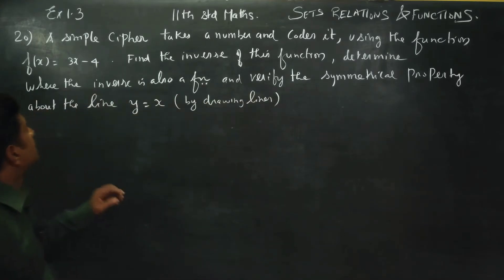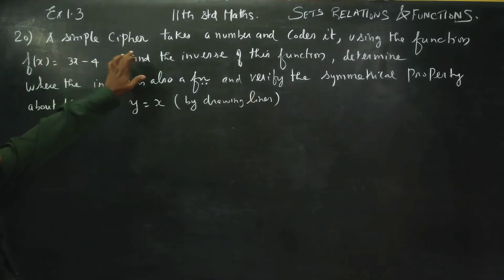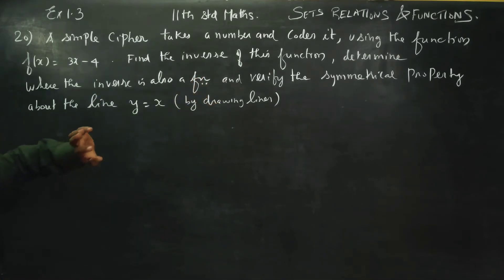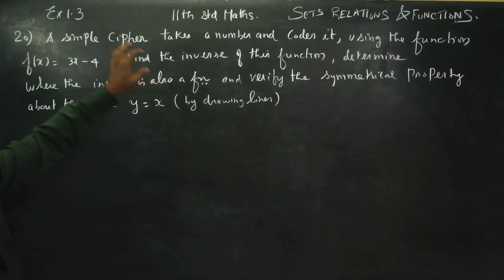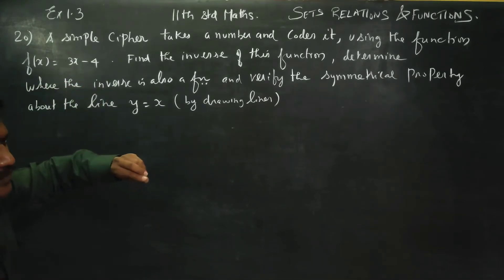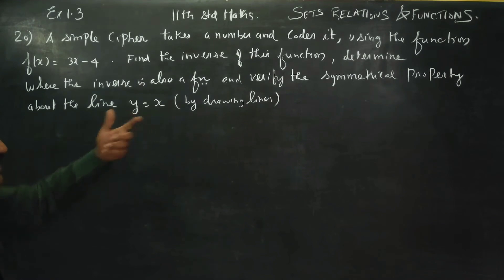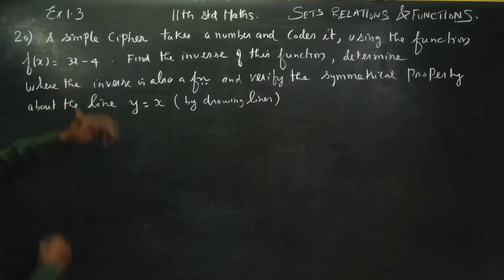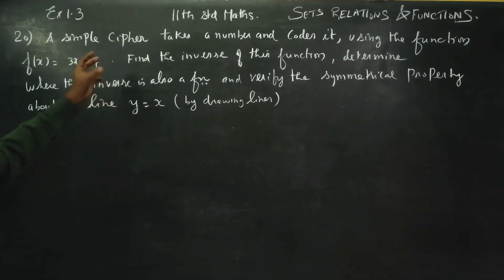A simple cipher takes a number and encodes it. It is a system — if you have a number and an algorithm, you can add a number to another number. F of x is equal to 3x minus 4. For example, you need a PIN code. The PIN code is saved. It is a system.